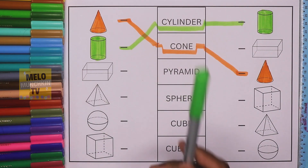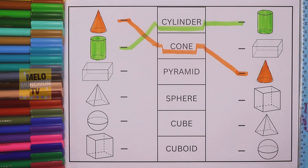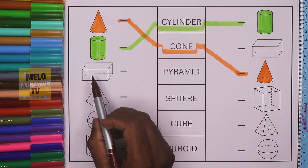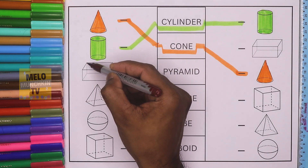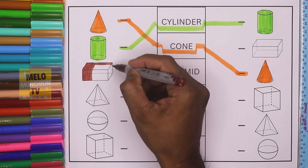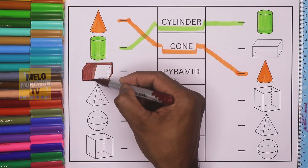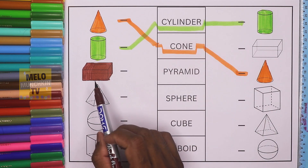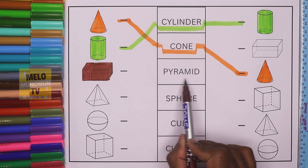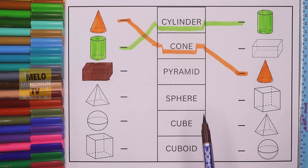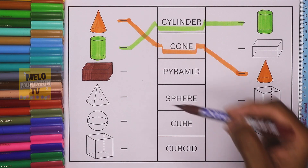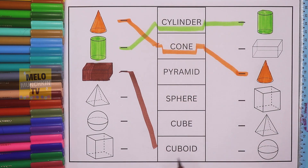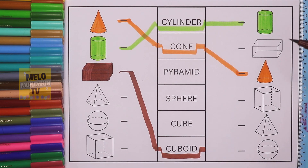Next, I'll take brown color to color this shape called cuboid. This is cuboid. So let's find out the name — cuboid. Here we have pyramid, sphere, cube, and cuboid. This is the word. I'll join it like this and then find the cuboid from the right-hand side. The second one is the same, so this is also cuboid. I'll color it in brown.